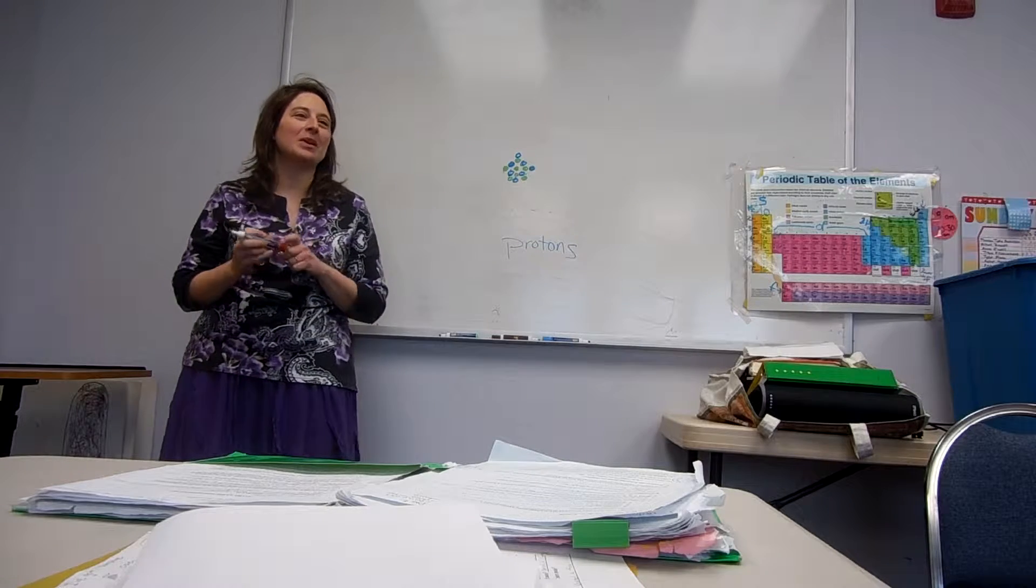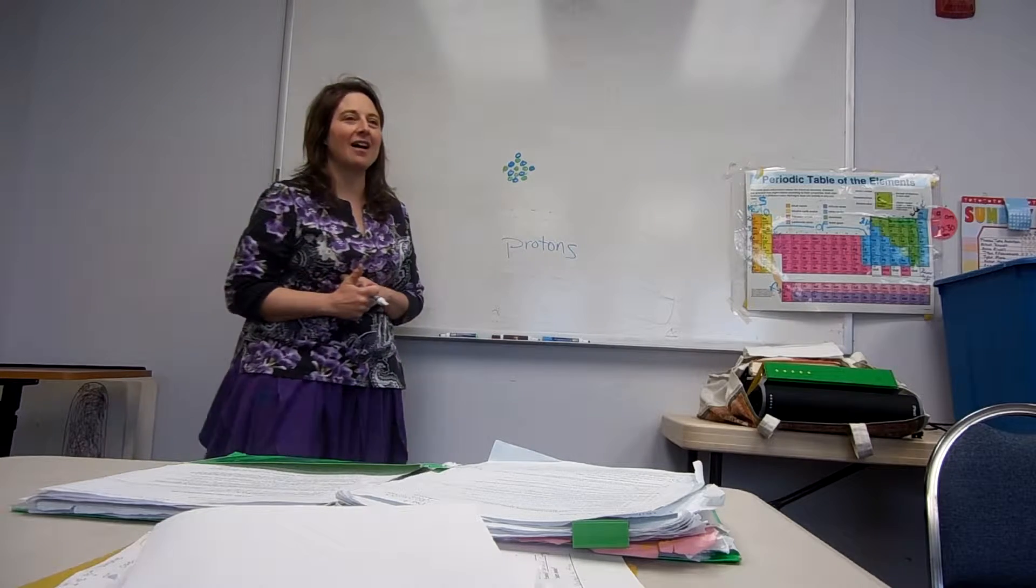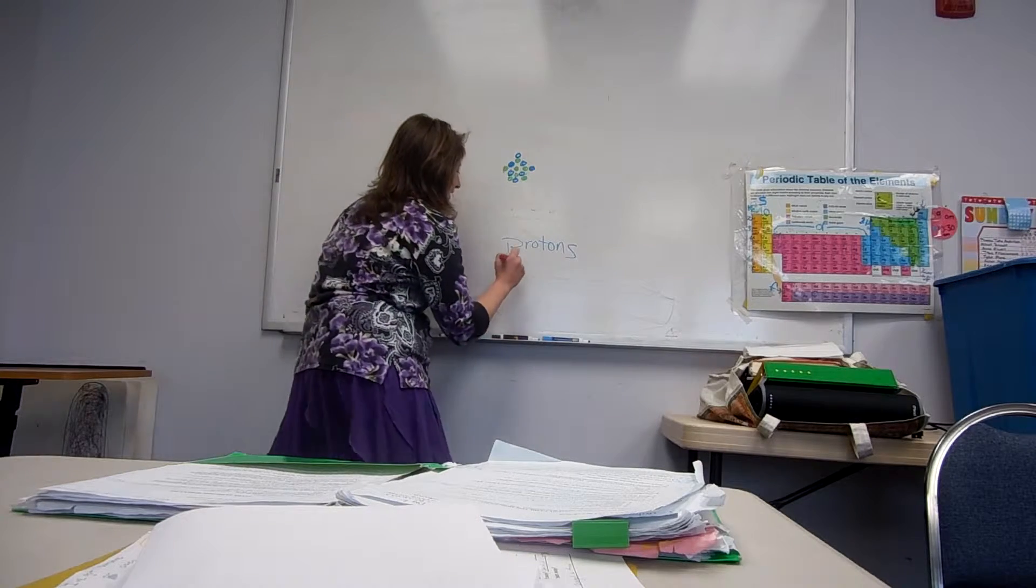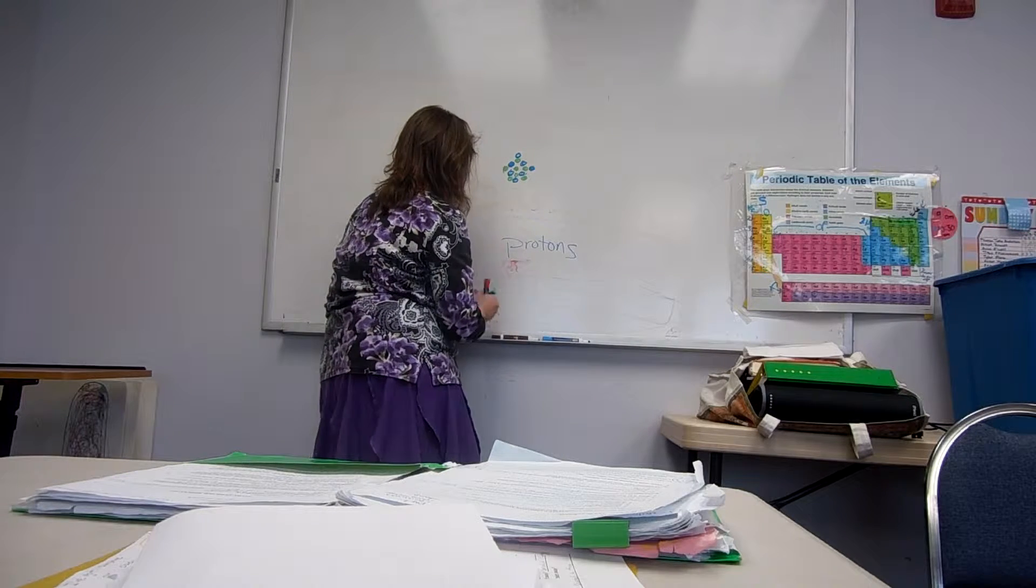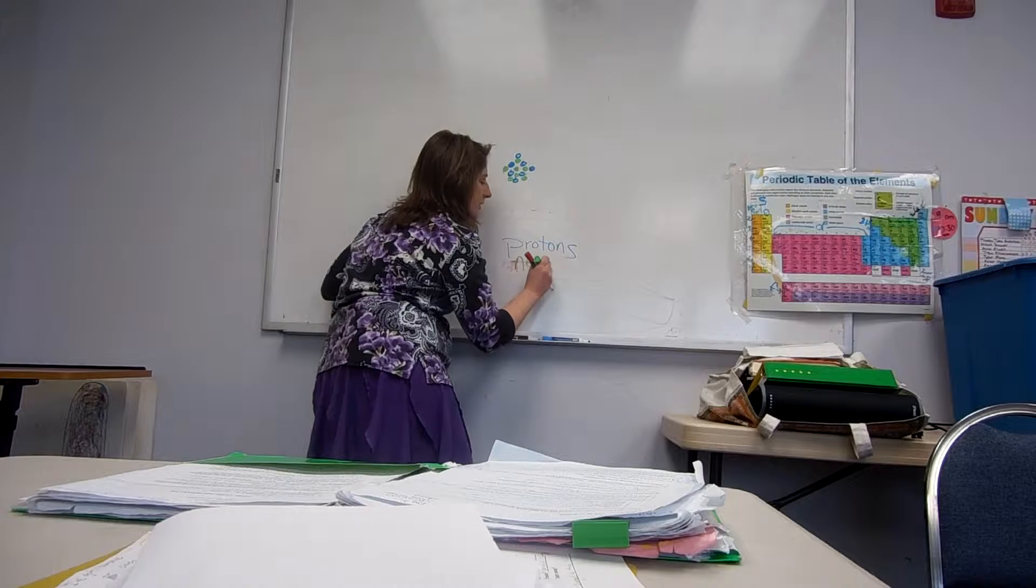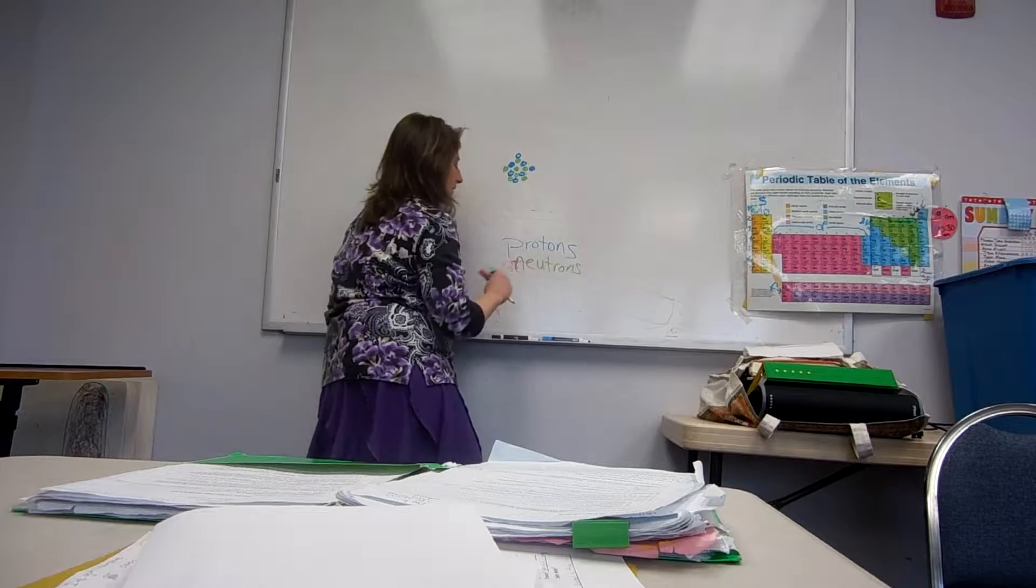All right. So, I haven't put electrons yet. Duchene, what element do we have? Nitrogen. Oh, no, not neutrons. I think there's in green. Neutrons.